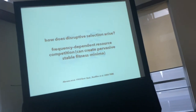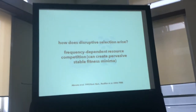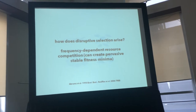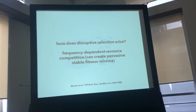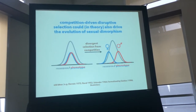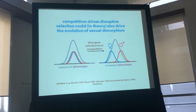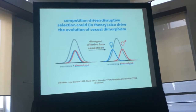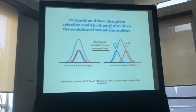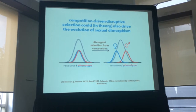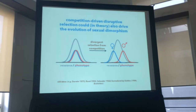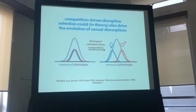One interesting wrinkle is that this disruptive selection arising from frequency-dependent resource competition can lead to things besides ecological speciation. One of the most commonly considered outcomes is within-species polymorphism, primarily ecological sexual dimorphism. The idea is that resource competition can lead to sexually antagonistic natural selection that drives ecological character displacement between the sexes — just as competition can drive character displacement between lineages.